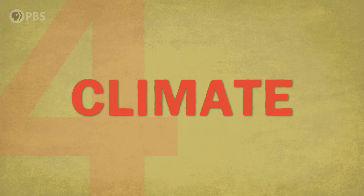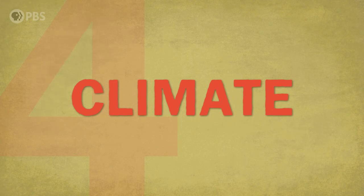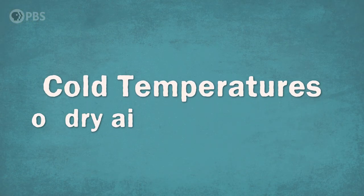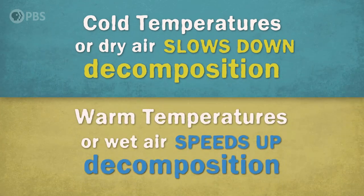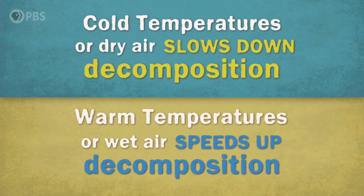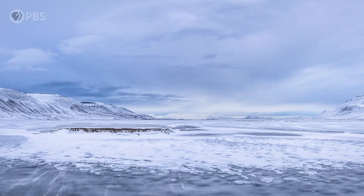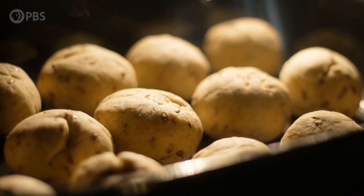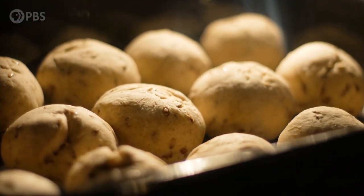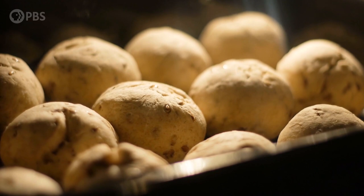Climate's influence on soil formation is pretty varied depending on where you are on earth, but temperature and humidity are some of the big factors. Super cold temperatures or really dry air will slow down decomposition. Conversely, warm and wet conditions will speed up decomposition and soil formation. Think a frozen tundra versus a rainforest — or how when you're cooking in the kitchen, you can start with the same ingredients and get a different meal depending on how you cook them.